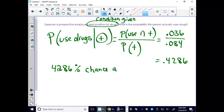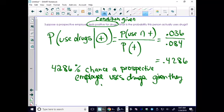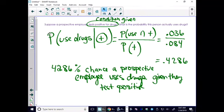Remember this formula is on your formula sheet, and we get a 42.86% chance a prospective employee uses drugs given they test positive for drugs. Only 42.86% chance. It's probably a bad test.